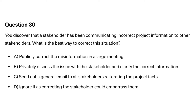Question thirty. You discover that a stakeholder has been communicating incorrect project information to other stakeholders. What is the best way to correct this situation? A. Publicly correct the misinformation in a large meeting. B. Privately discuss the issue with the stakeholder and clarify the correct information. C. Send out a general email to all stakeholders reiterating the project facts. D. Ignore it as correcting the stakeholder could embarrass them.